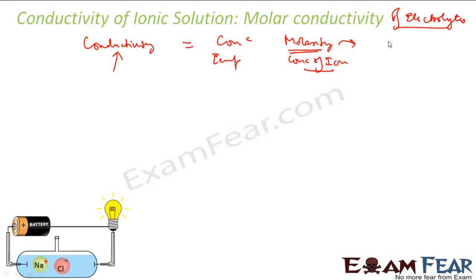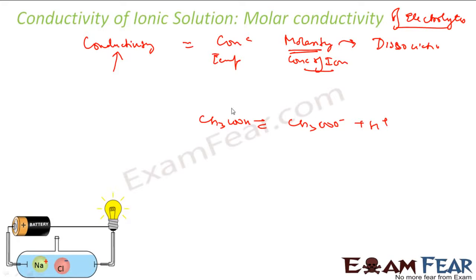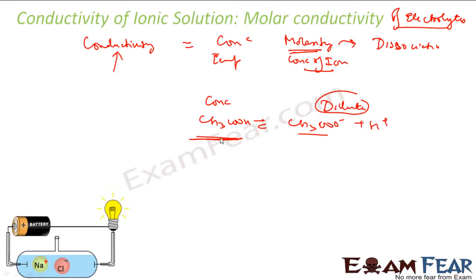Molarity also determines how far the electrolyte dissociates. For example, acetic acid dissociates into acetate (CH₃COO⁻) and H⁺ ions. But in a concentrated solution, most of the acetic acid remains undissociated. In a dilute solution, most of the acetic acid exists in ionic form. The undissociated form does not conduct electricity.